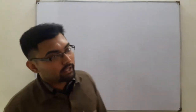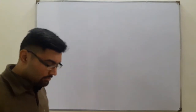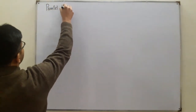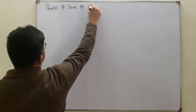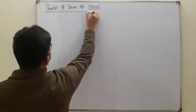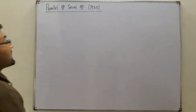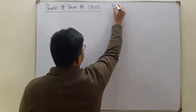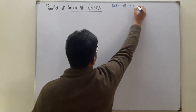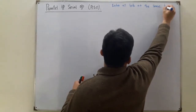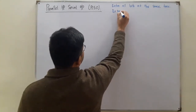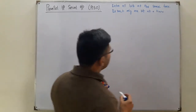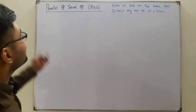Assalamu alaikum, it's Alar Khan here, and today we have the last configuration of the register — the Parallel Input Serial Output, which we call PISO. In PISO, you enter all bits at a single time, but you cannot extract all at the same time — you can extract only one bit at a time. Let's say I'm using a 3-bit register.